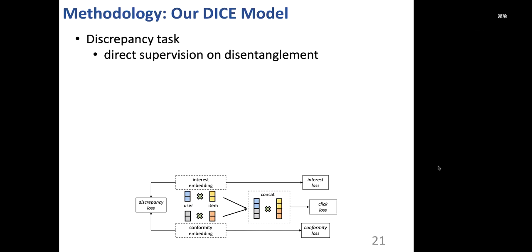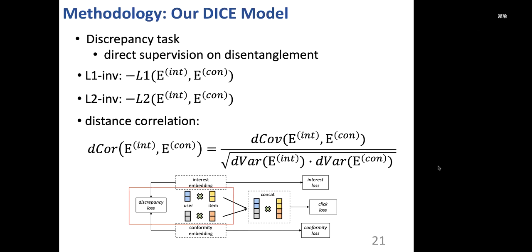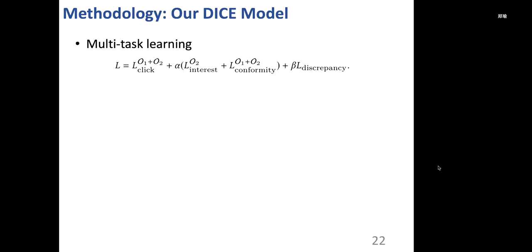We also add an extra discrepancy task to impose direct supervision on embedding disentanglement. Specifically, we propose three options, which are L1-norm, L2-norm, and distance correlation. The four tasks are combined with two hyperparameters, alpha and beta.